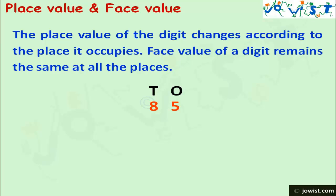If we exchange the digits of 58, we have number 85. Both these numbers have 5 and 8. But why are they different?